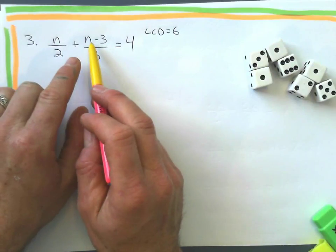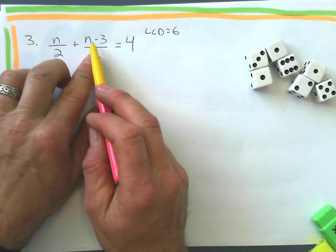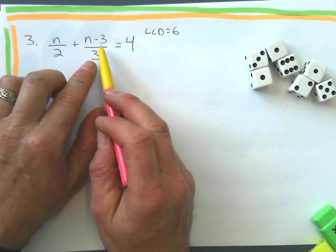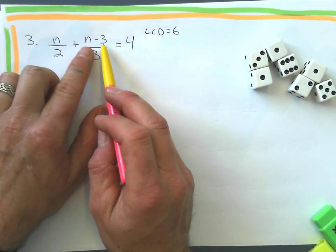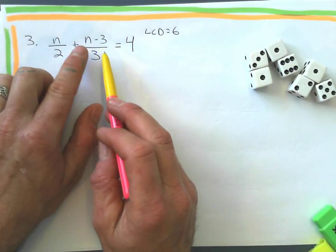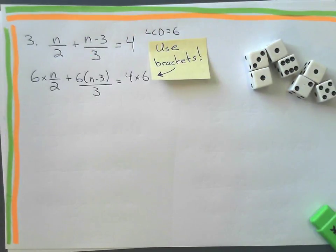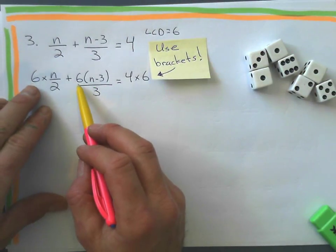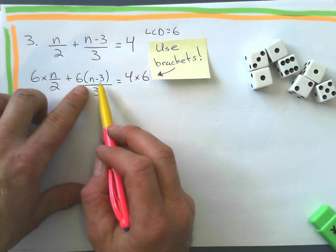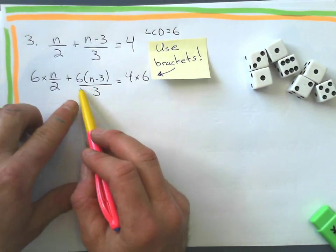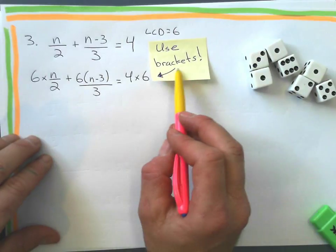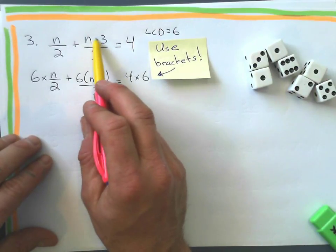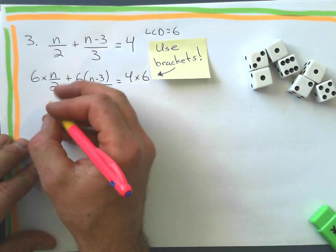Now the only thing is, if you've got something on the top of the fraction that is more than one term, like n minus 3, then, when you multiply this by 6, it has to be put in brackets. Okay, so this is what we get, and so instead of doing this 6 times right here, I just put 6 brackets n minus 3. Okay, and that means 6 times n minus 3. So use brackets when I've got something like that in the numerator.